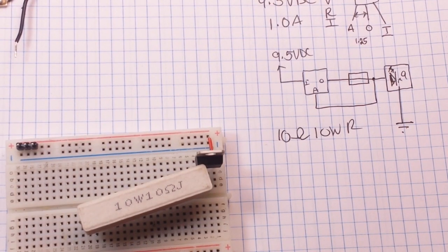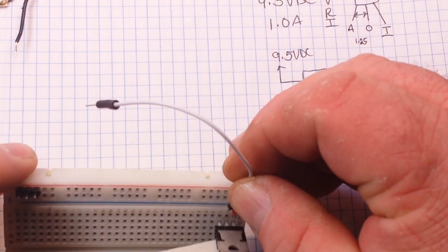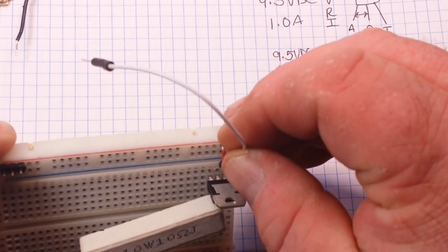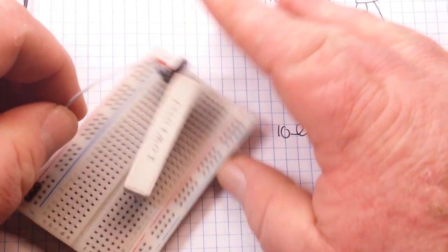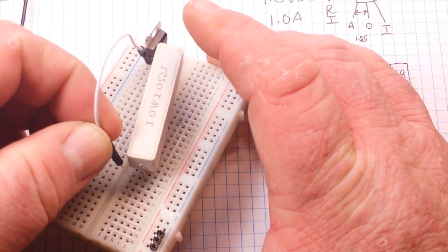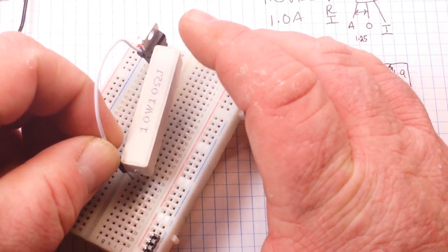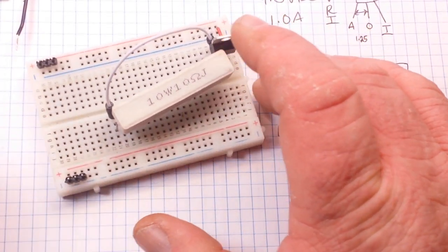Then I'm going to take a jumper wire from the adjust pin, and I'm going to bring it over to the same row in the breadboard as that leg there, which will work for our purposes.